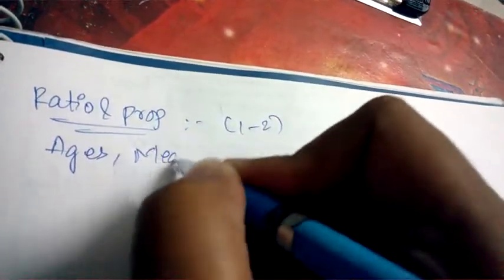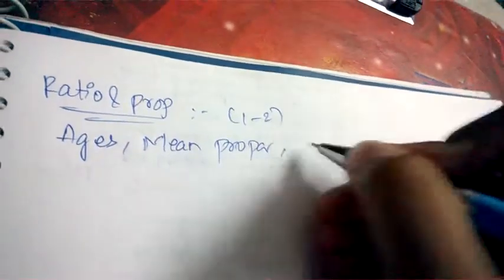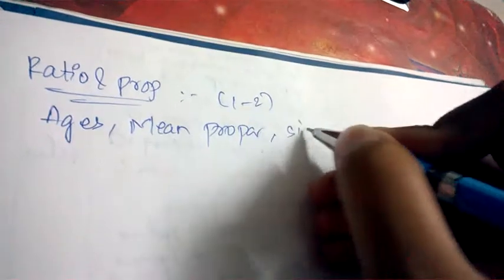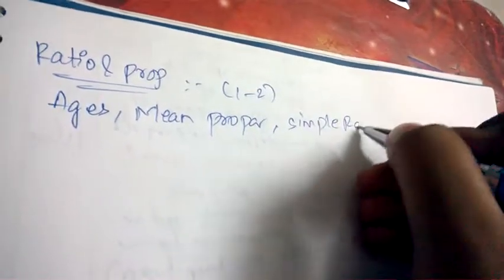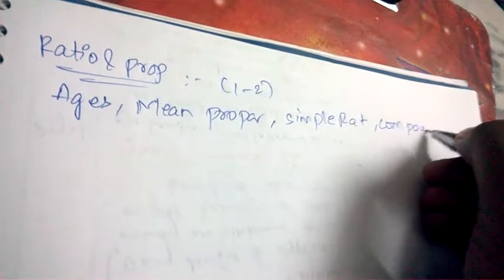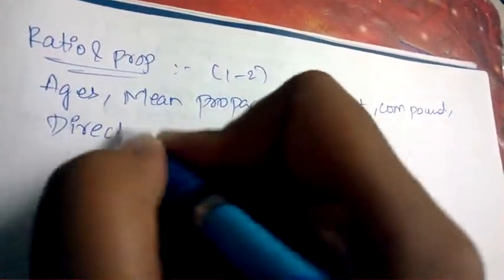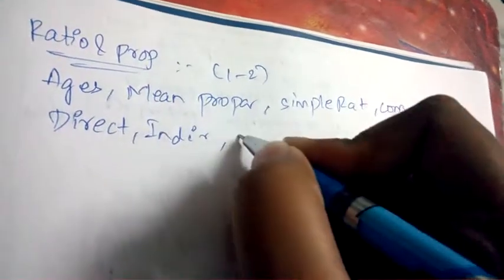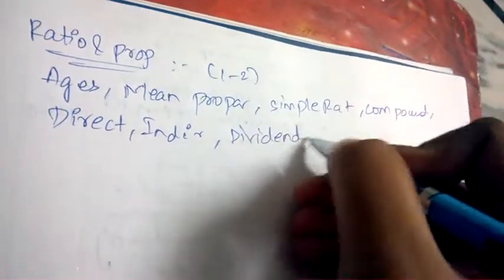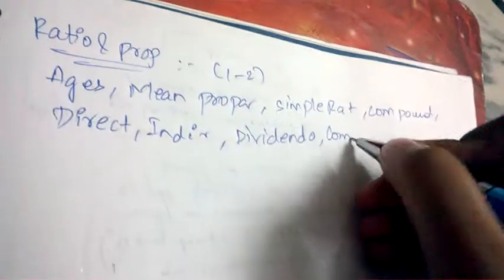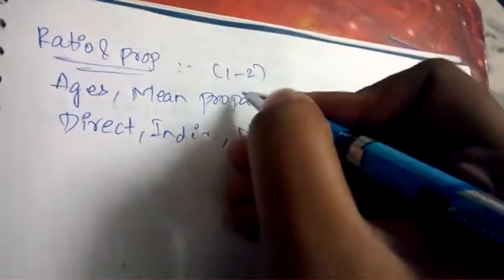Coming to Ratio and Proportion, the weightage is just 1 to 2 questions. The topics covered are ages, mean proportions, simple ratios, compound ratios, direct proportion, indirect proportion, componendo, dividendo, and the basics of these concepts.